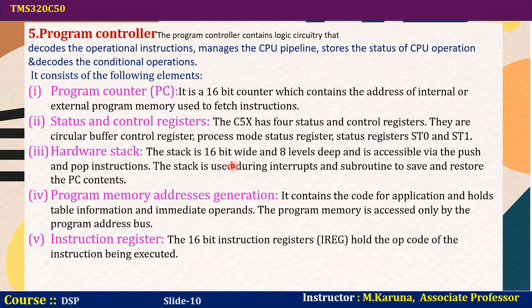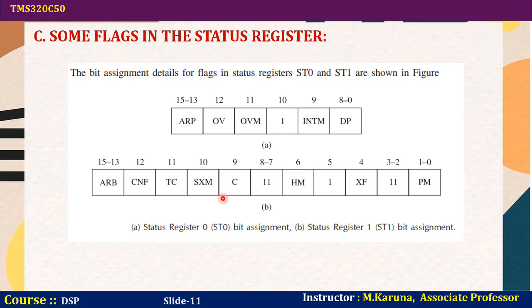The hardware stack is used before jumping from the main program to a sub-program. The return address and status of the previous program execution are stored onto the stack. After performing the subroutine, processor control returns to the main program by retrieving the saved data from the stack. The program memory contains program code — the set of instructions — and also stores immediate operands. The instruction register is a 16-bit register that holds the opcode of the instruction being executed.